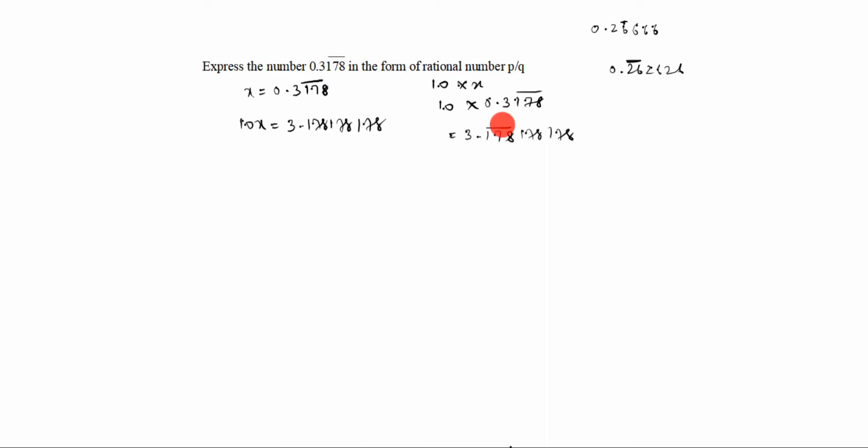The answer is 3.178 178 178. You see the bar is in three places, so we have to add three zeros on the left-hand side. Already one zero is there. We have to write three more zeros. After that, x equal to 10,000 into what is x value, 0.3178 bar.